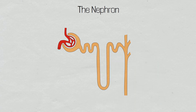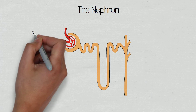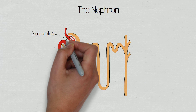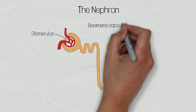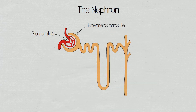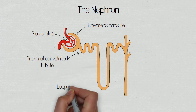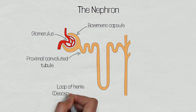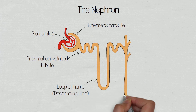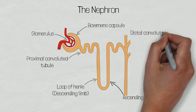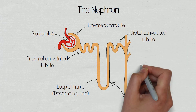There are approximately 1 to 1.5 million nephrons in each kidney. The nephron consists of several key structures, which include the glomerulus, the Bowman's capsule or glomerular capsule, the proximal convoluted tubule, the loop of Henle, which has the descending and ascending limb, the distal convoluted tubule, and the collecting duct.